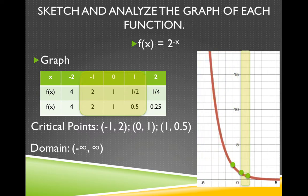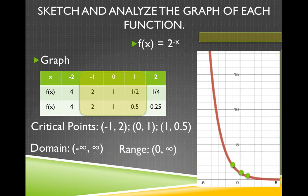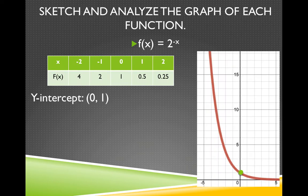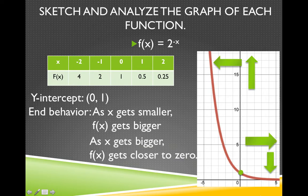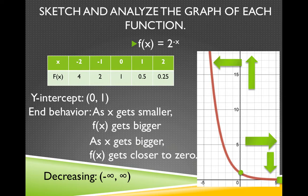The domain is all real numbers. The range is from 0 to positive infinity, not including 0, because this function will never reach 0 or touch the x-axis. That means there's an asymptote at the x-axis, which is the line y equals 0. The y-intercept is 1. For end behavior: as x gets smaller, f of x gets bigger; and as x gets bigger, f of x gets closer to 0. This is a decreasing function — the y value decreases over the whole domain from negative infinity to infinity.